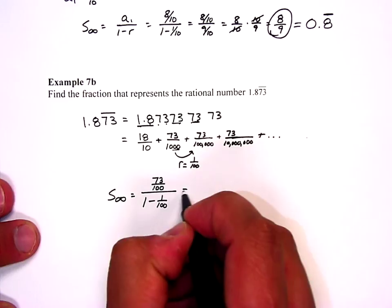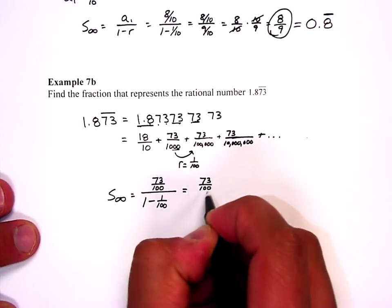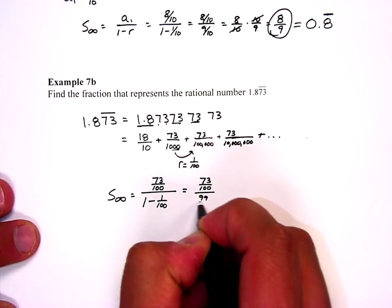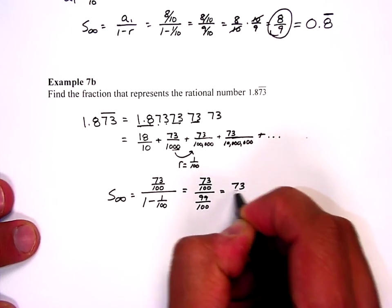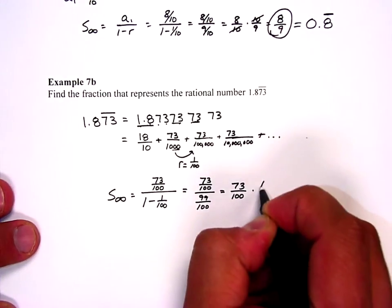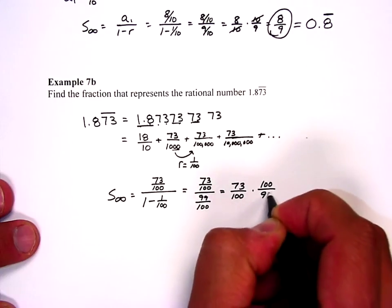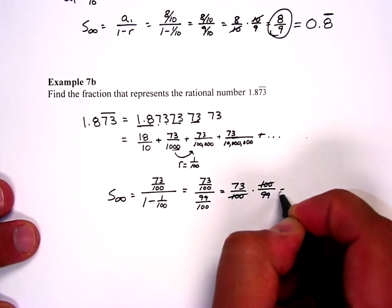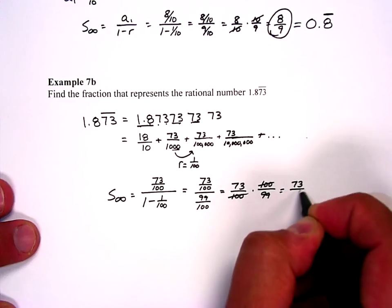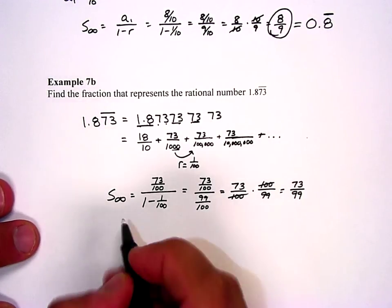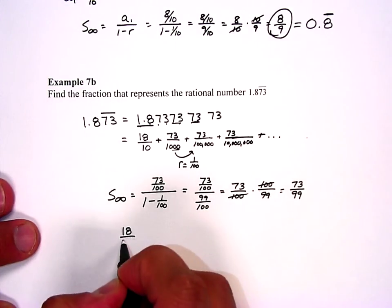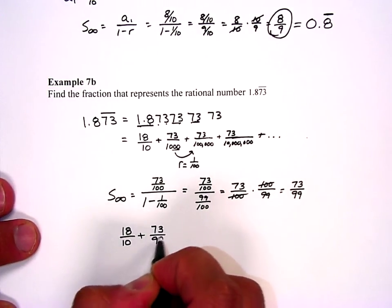So 73 over 1000, 99 one-hundredths. 73 over 1000 times 100 over 99. And I get 73 over 99. Now that's just the repeating part. I also have to include the 18 tenths plus 73 ninety-ninths.